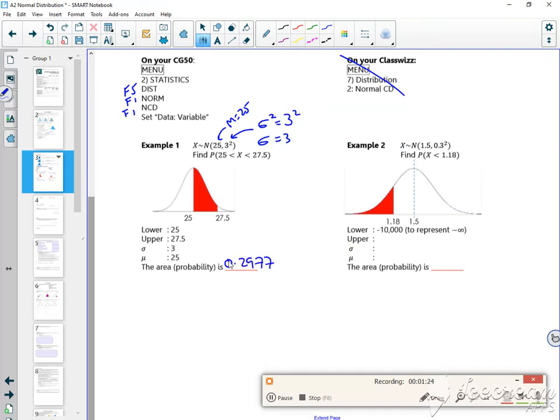There's another example here for less than 1.18. This one we're fine because it was contained within those numbers. But this one, it's going from 1.18 and going that way. So I need to choose a suitable lower value that would be representative of minus infinity. I'm going to use minus 10,000 and my upper will be 1.18.